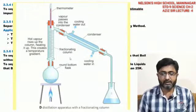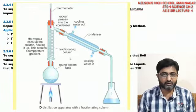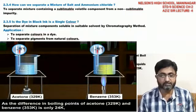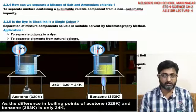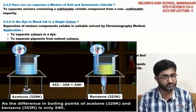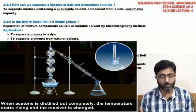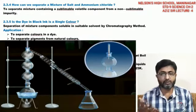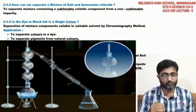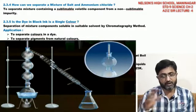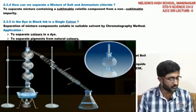For example, benzene and acetone have a temperature difference of less than 25 degrees Celsius — about 24 degrees. Once boiled, acetone, being more volatile with a lower boiling point, gets boiled off first and is collected by the fractional distillation tower.